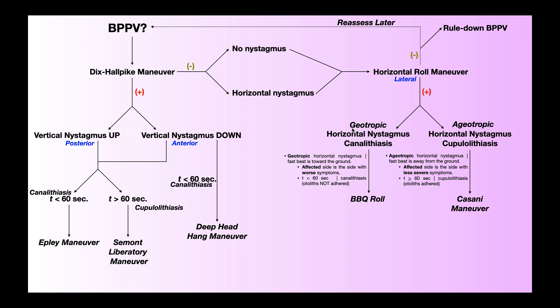A key point: when looking at geotropic and ageotropic nystagmus, determining the affected side is based on whichever side has worse symptoms or less severe symptoms, respectively. That's very different from the Dix-Hall-Pike maneuver, where we look at the direction of the torsional component of the nystagmus — that direction of torsion is the direction of the affected side. If the torsion is right, the affected side is right; if the torsion is left, the affected side is left.